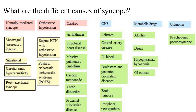What are the different causes of syncope? There are a host of causes ranging from neurally mediated syncope, orthostatic hypotension, cardiac causes, central nervous system causes, metabolic issues, drugs, and some unknown causes. In this video, I will be talking mostly about vasovagal or neurocardiogenic syncope, situational syncope, carotid sinus hypersensitivity, post-exertional syncope and orthostatic hypotension. In the next video, I will be talking about the remaining causes including cardiac causes.